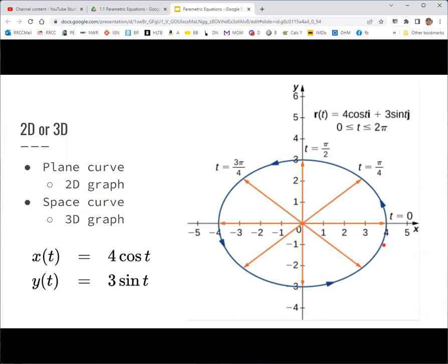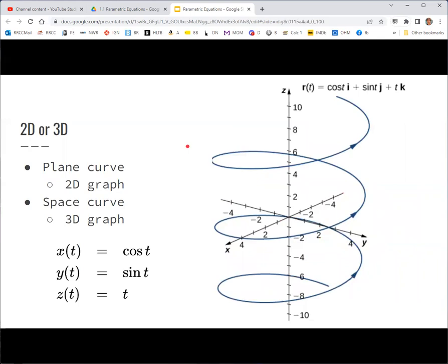When we're working in two dimensions, this parametric curve is sometimes referred to as a plane curve, because you're in the xy plane. We saw this example of an ellipse form there. But we're also doing stuff in three dimensions, and the parametric curve for three dimensions is known as a space curve, because you're in three-dimensional space. All you do is add on a third parametric equation for z.